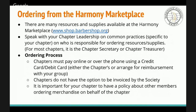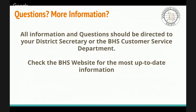Ordering from the Harmony Marketplace. There are a lot of resources and supplies available through the Barbershop Harmony Society's Harmony Marketplace at www.shop.barbershop.org. Speak with your chapter leadership on who is responsible for ordering — for most chapters it's the chapter secretary or treasurer. Chapters must pay online or over the phone using a credit or debit card, using the chapter's card or arranging reimbursement. Chapters do not have the option to be invoiced by the society, which is a change from prior years. It's important to have a policy about members ordering merchandise on behalf of the chapter.